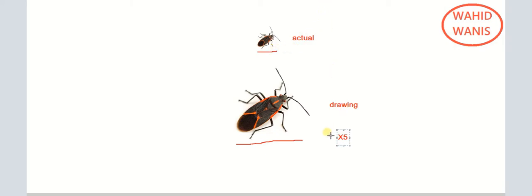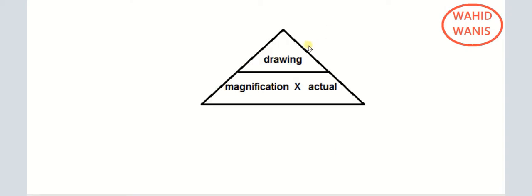Magnification is written as 'times', like ×5. If the magnification is 5 times, you write it as ×5. If you want to find the magnification, it is drawing divided by actual. If you want the actual length, it is drawing divided by magnification.